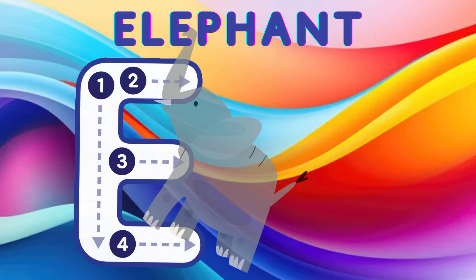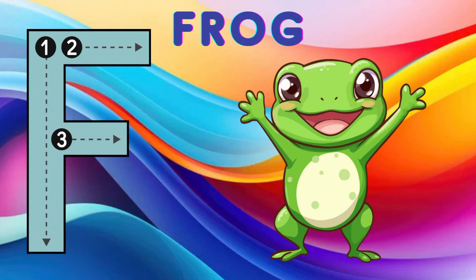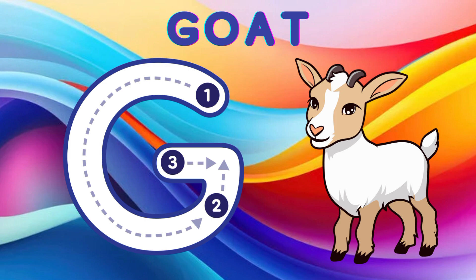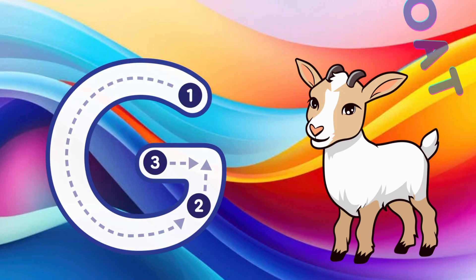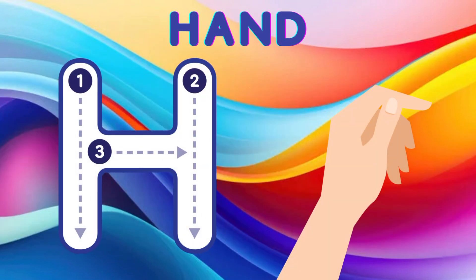E is for elephant, e-e-elephant. F is for frog, f-f-frog. G is for goat, g-g-goat. H is for hand, a-a-hand.